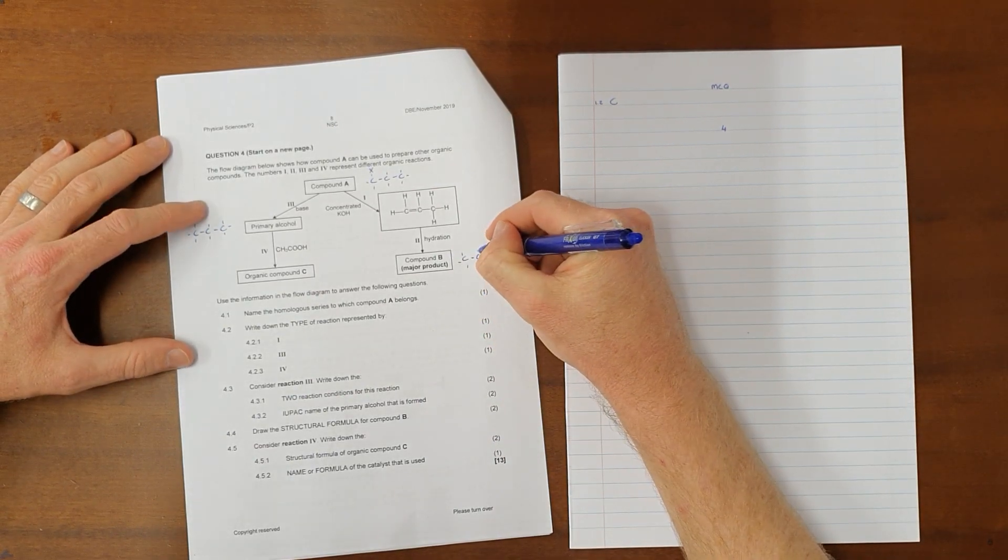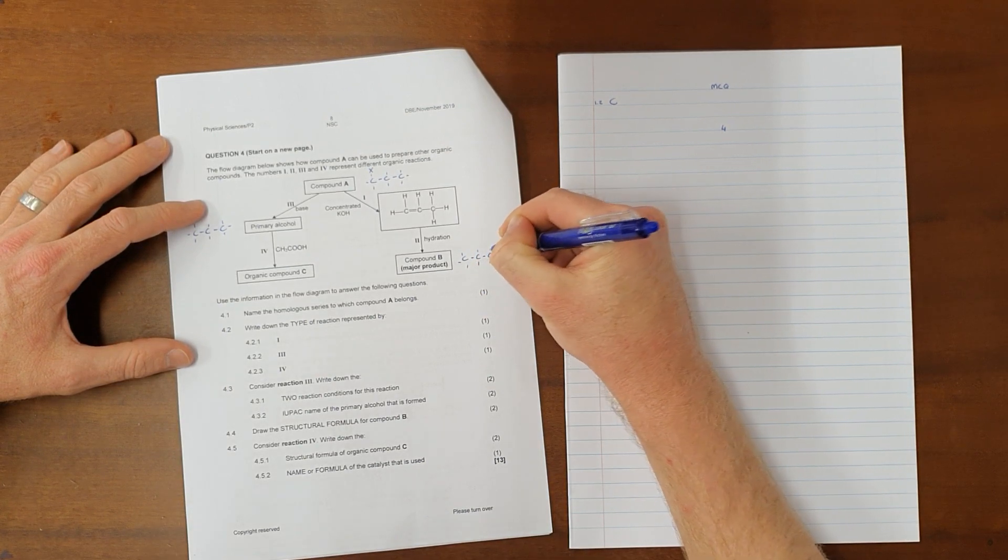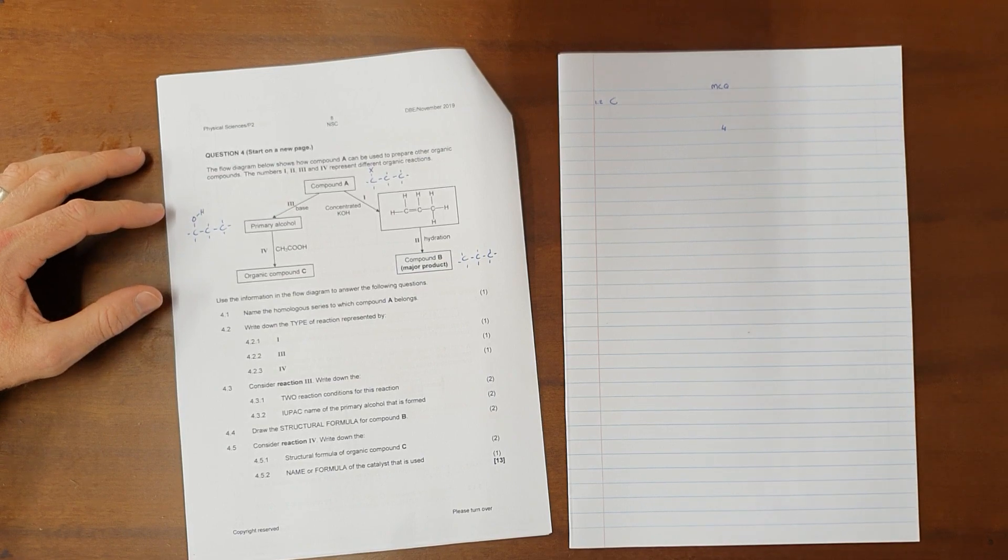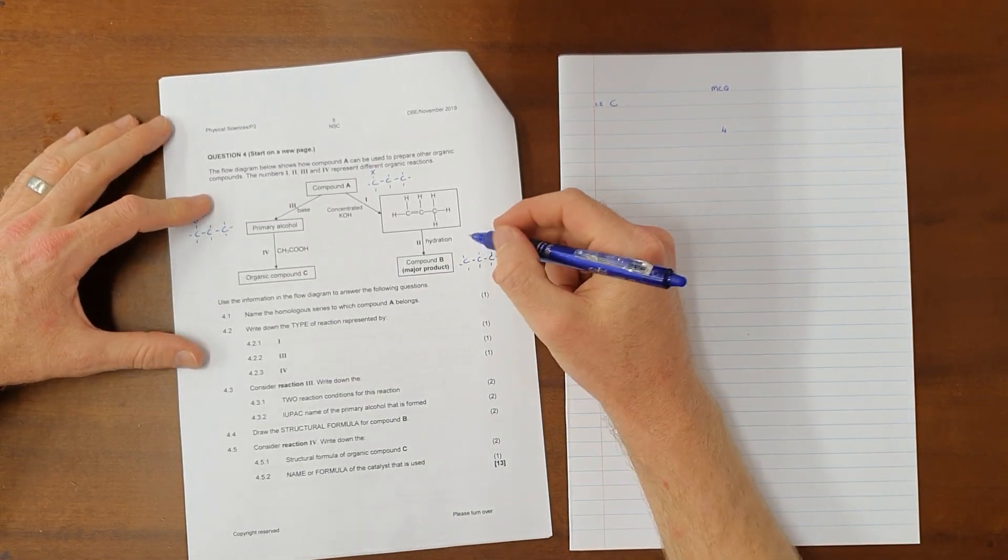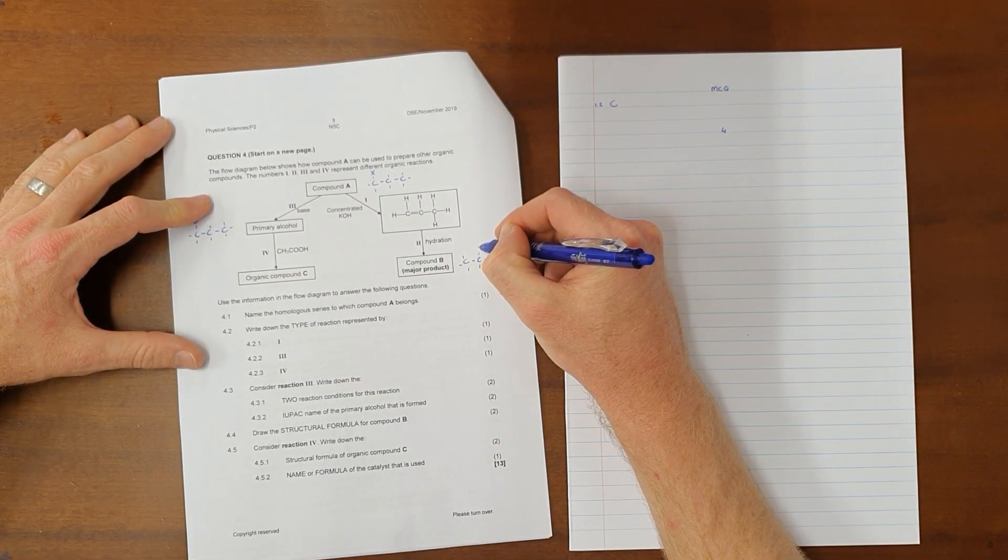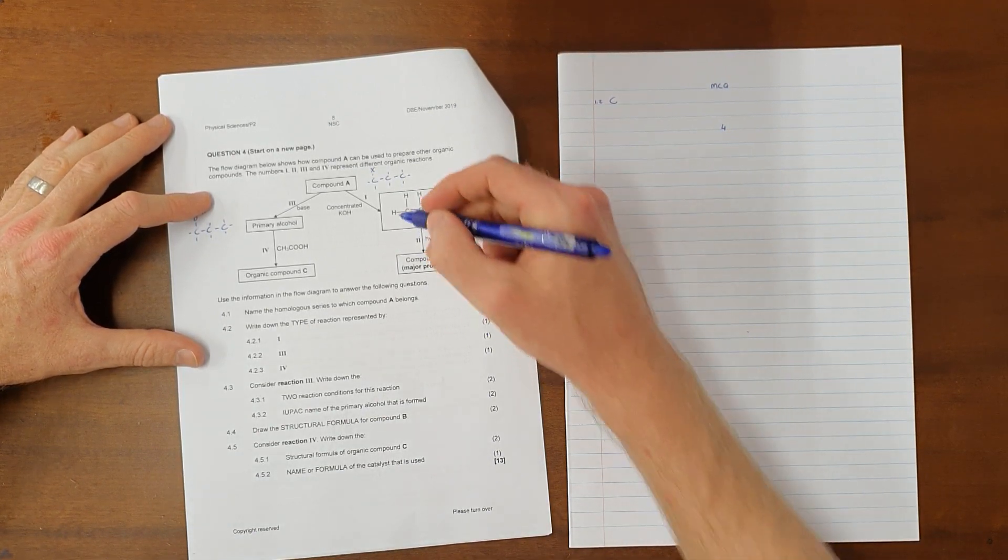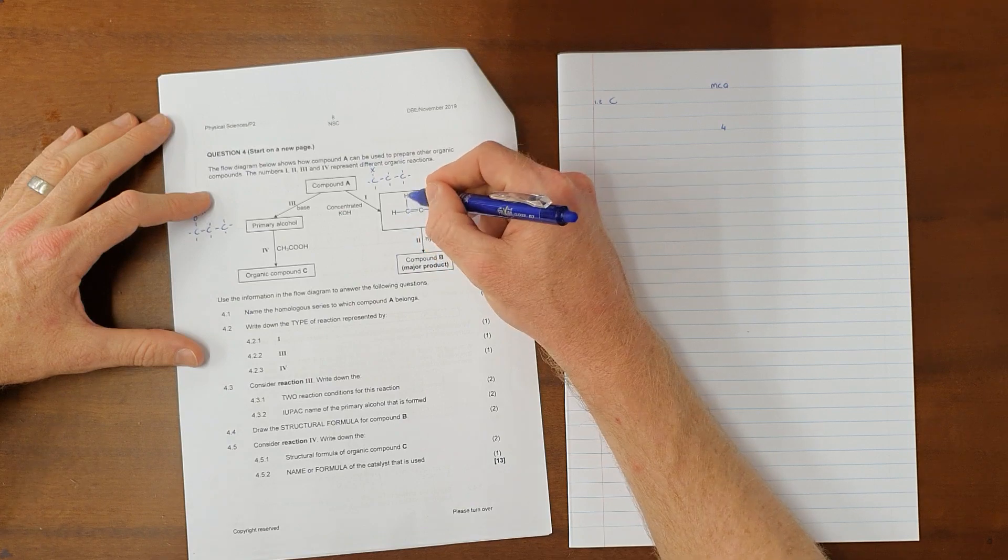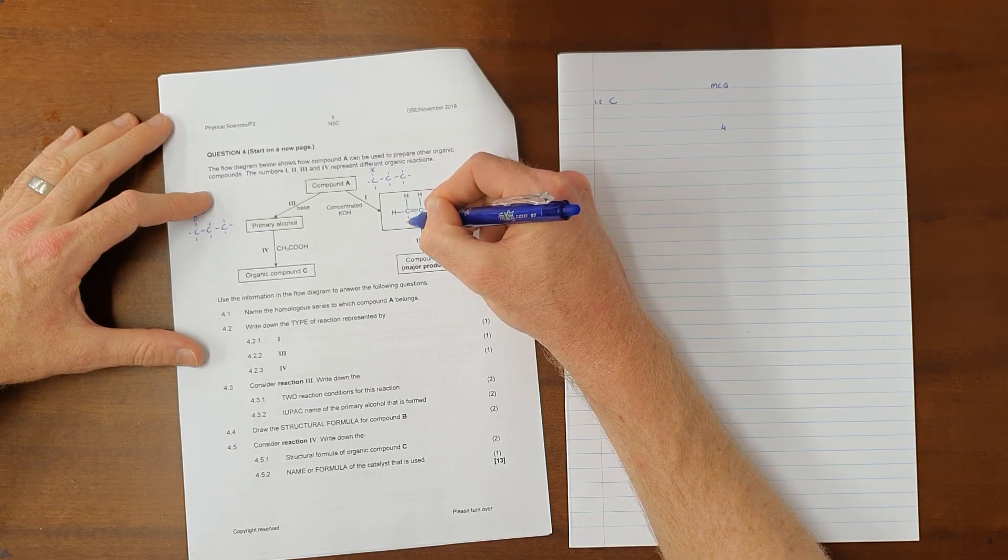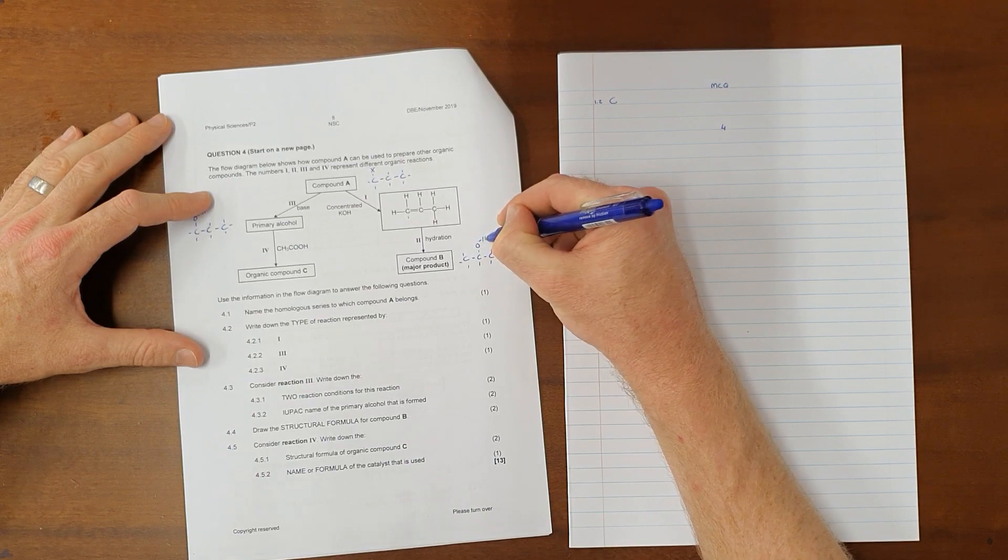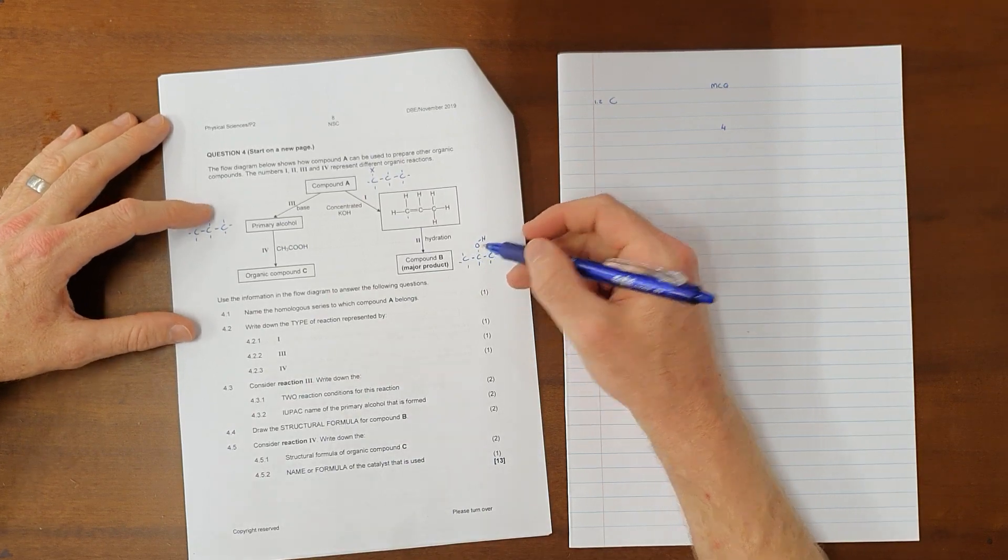Where we know from the rule that we must follow when breaking double bond, which is Zaitsev's rule, that says that the hydroxyl group will always be, excuse me, the hydrogen will always attach itself to the carbon that had more hydrogen. So that means this carbon would get the additional hydrogen, which means that our hydroxyl group would then be attached to the second carbon.